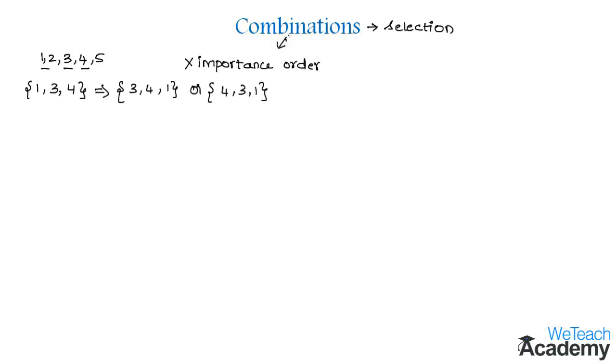In our previous video, we discussed some formulas of combinations. The number of combinations of n dissimilar things taken r at a time can be denoted by nCr, where C represents combinations. The formula is n factorial divided by n minus r factorial into r factorial.